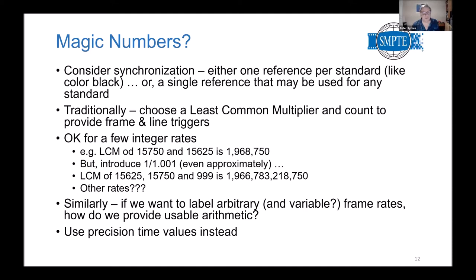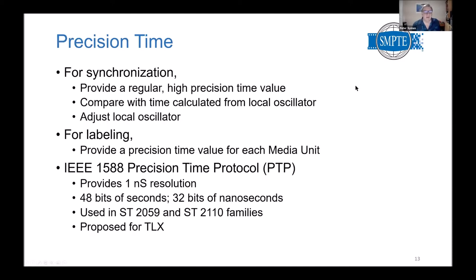The idea in both synchronization and labeling contexts is to use precision time values instead. For synchronization, the ST 2059 standard provides a regular signal of a high precision time value to everybody on the network. Each receiving device has a local oscillator counted down to also produce a time value, which is compared with the incoming time values from the server, and you adjust the local oscillator until they're in sync. For labeling, if we have a source of precision time, we just use that time to label each frame or media unit.